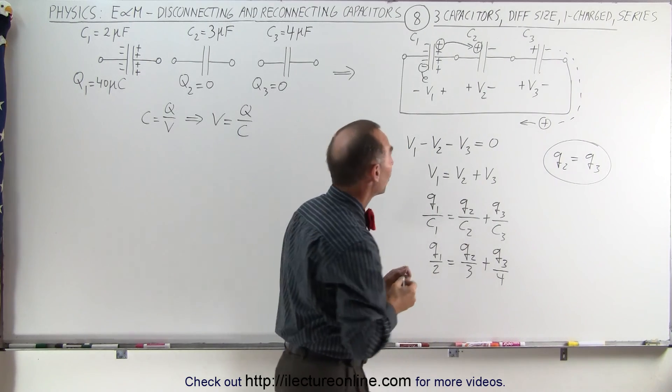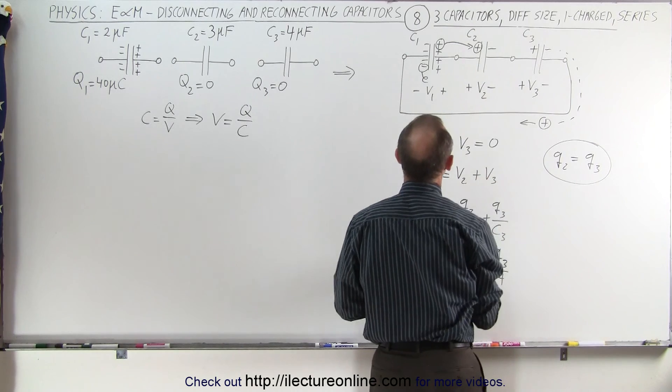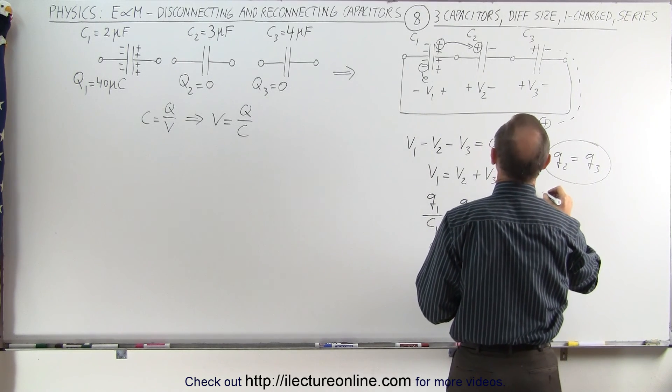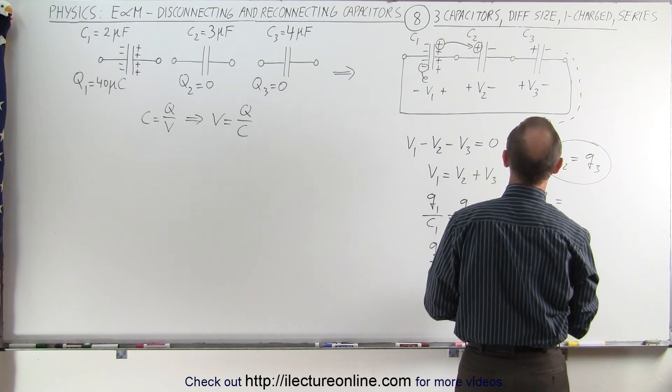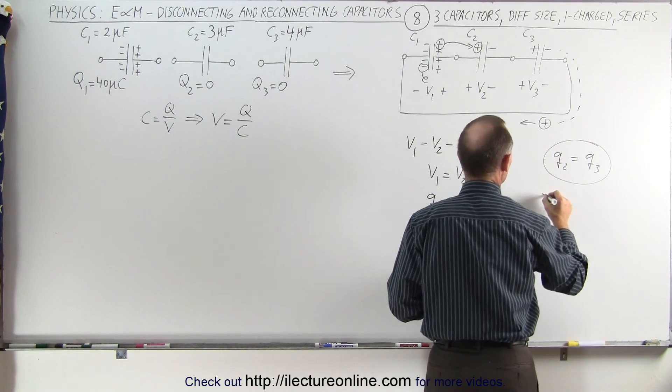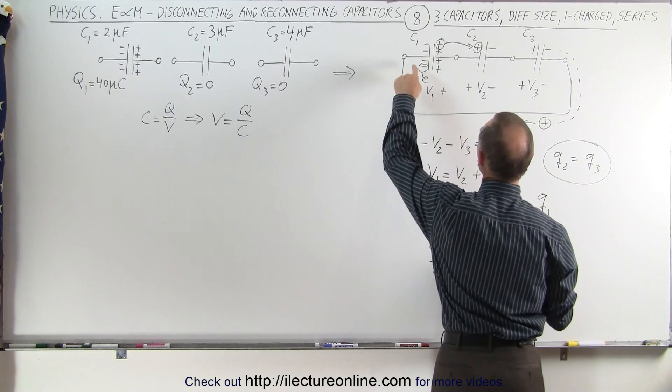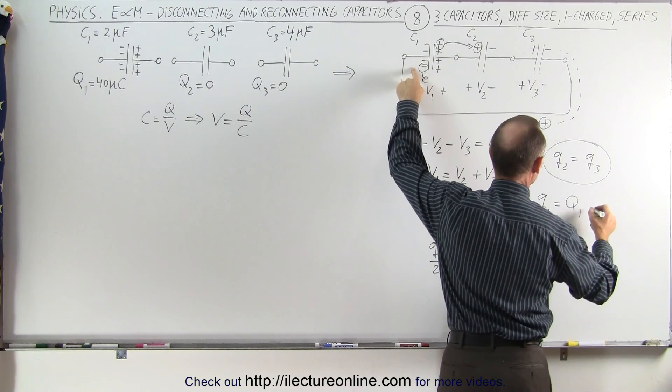And, again, like we saw before, whatever comes off of C1 moves on to C2. Q1, the amount of charge remaining on C1 is going to be equal to the charge you started with, big Q1, minus the amount of charge that moves to C2.